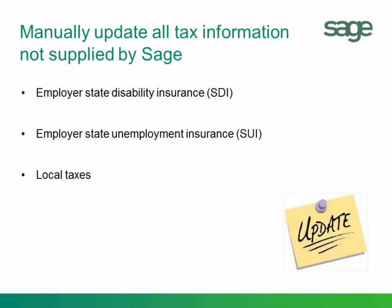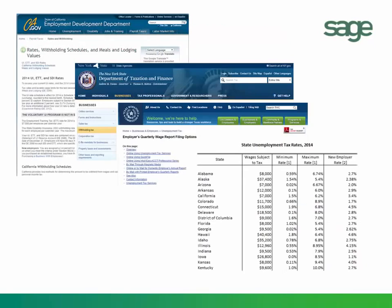Not everything is supplied by Sage. Those things that are company-specific, you're going to need to manually update: your employer state disability insurance, your employer state unemployment insurance, your employer unemployment state tax, and any local taxes. Make sure you've got that information available. You can go to the various entities that you're responsible for and they will give you the current information as far as employee taxes.